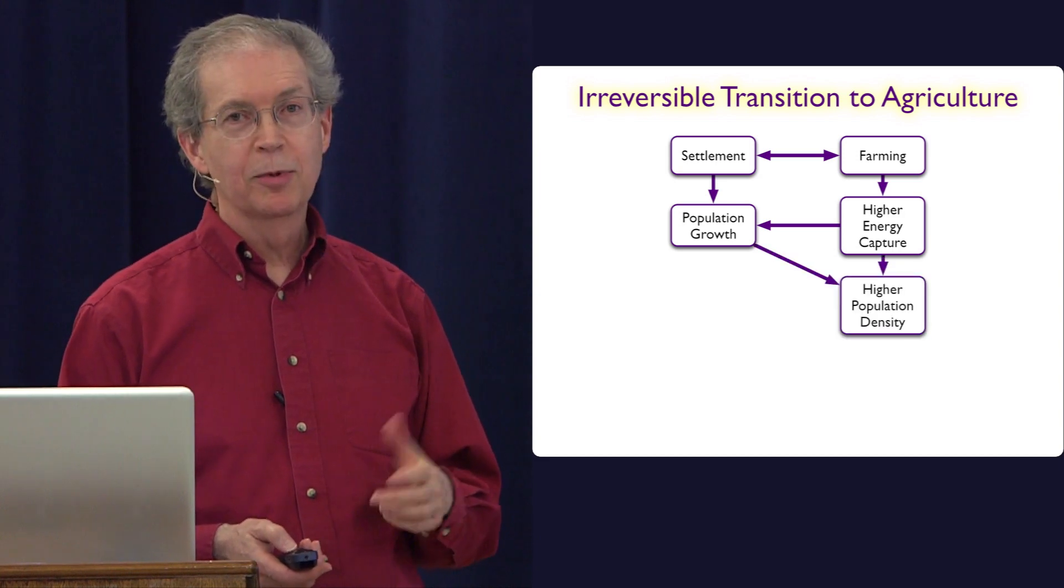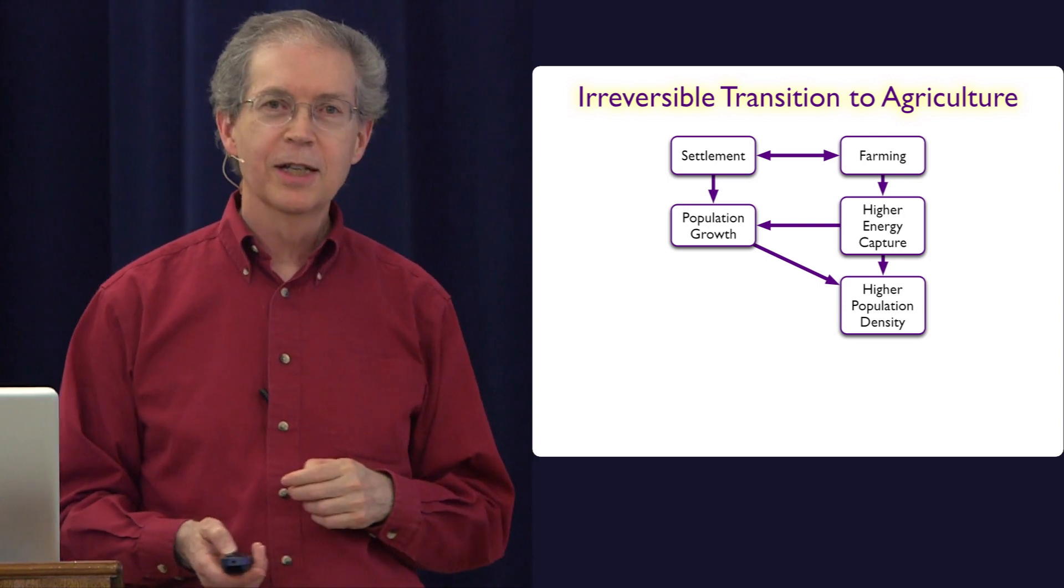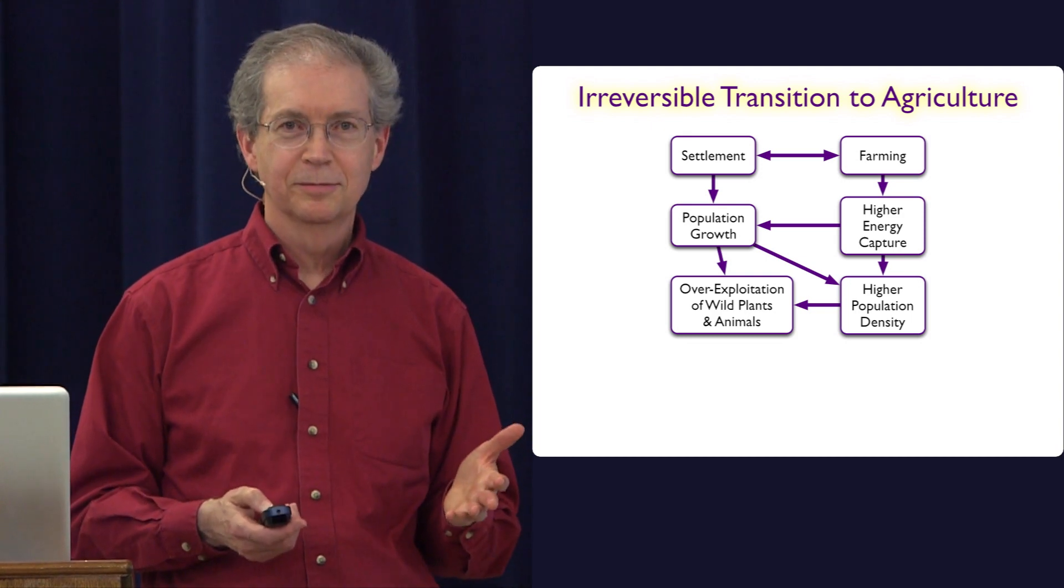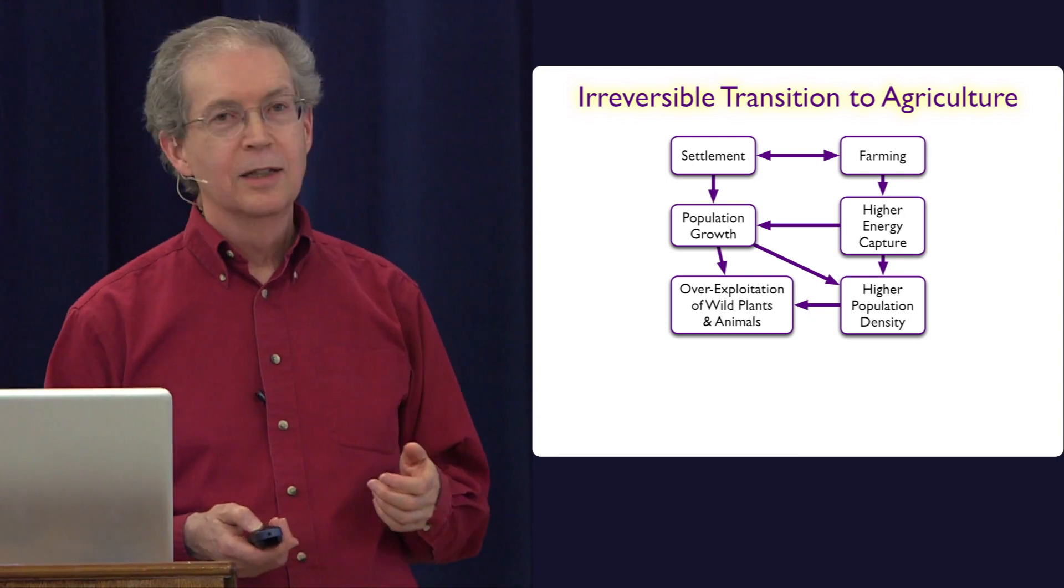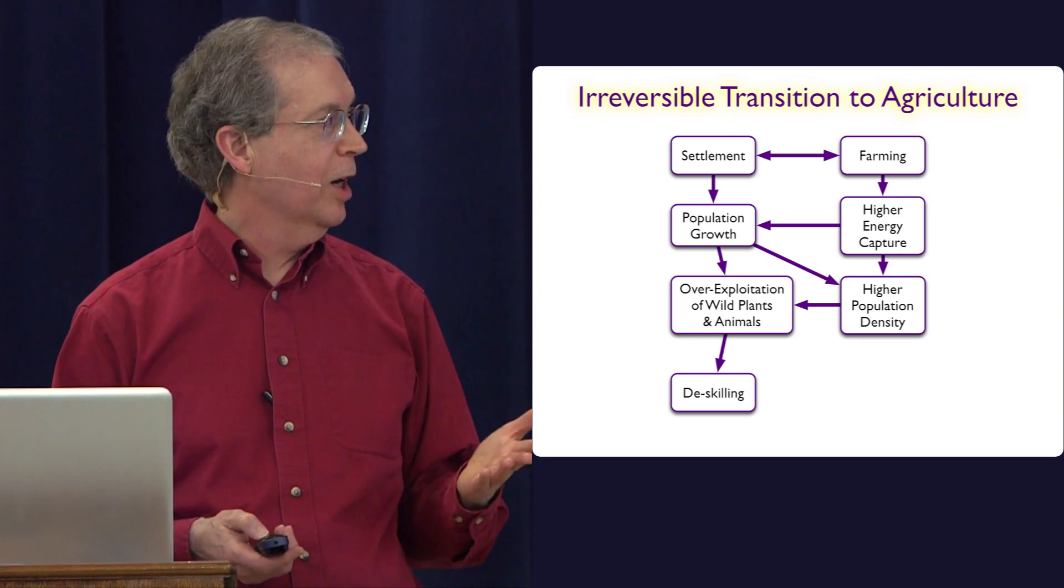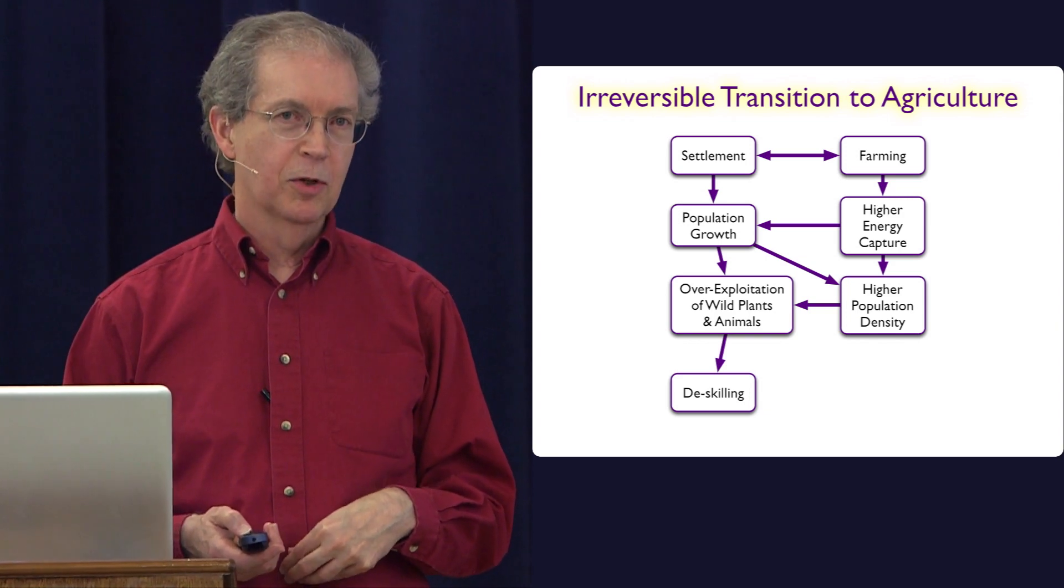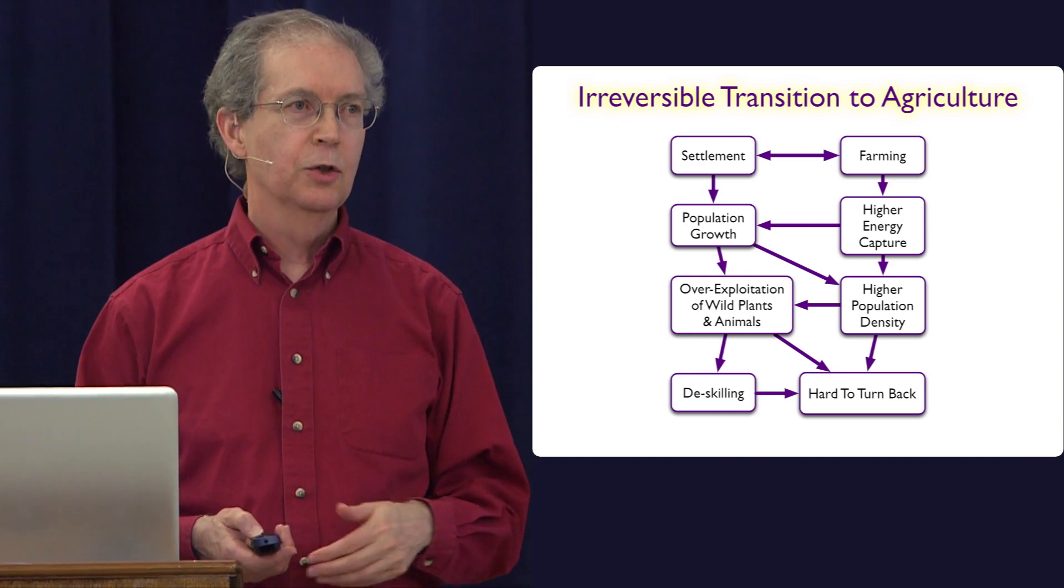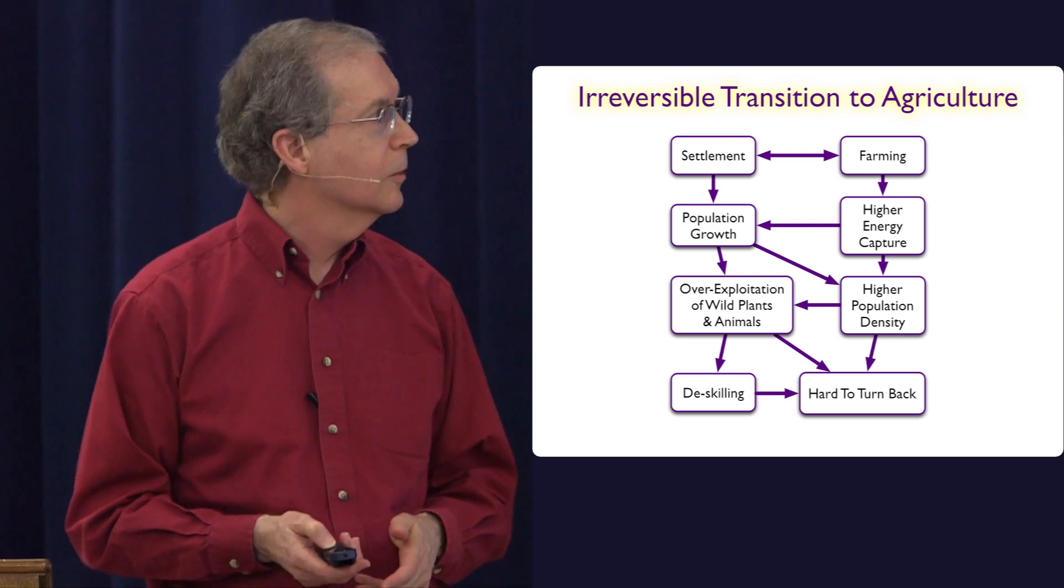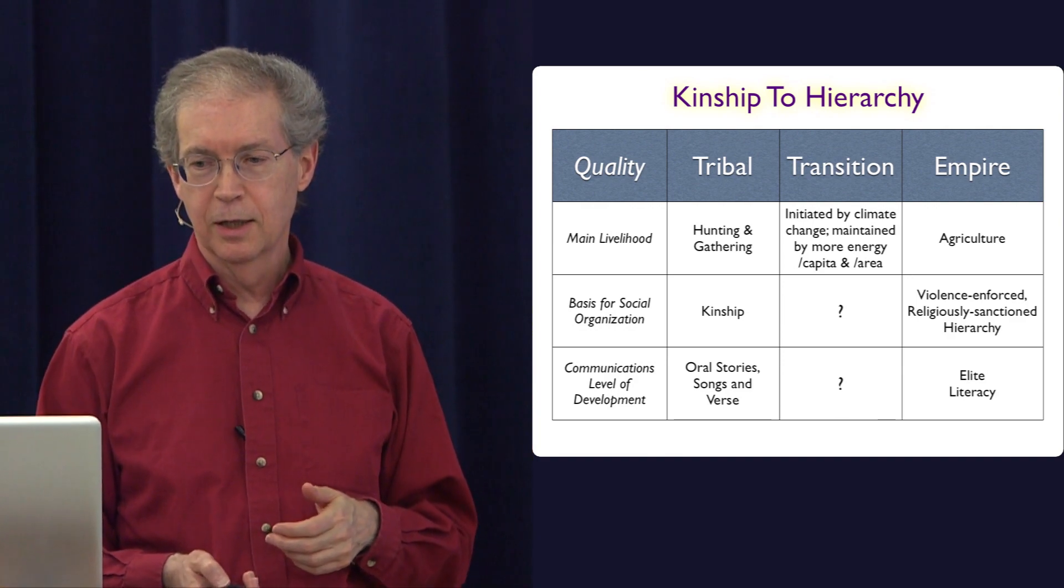The two of these lead to higher population density. After all, that's what a settlement is all about. Together, the population growth and the higher population density lead to over-exploitation of the wild plants and animals. So you're hunting and gathering, you over-exploited. And because of that, people lost the skills of hunting and gathering. And when you combine all those things, the higher population density, the over-exploitation and the de-skilling, you reach a point where it becomes essentially very hard. If you were to turn back, you would do so with huge population declines. So people don't do it. So this transition is initiated by climate change and maintained by the increased energy per capita and energy per land area.